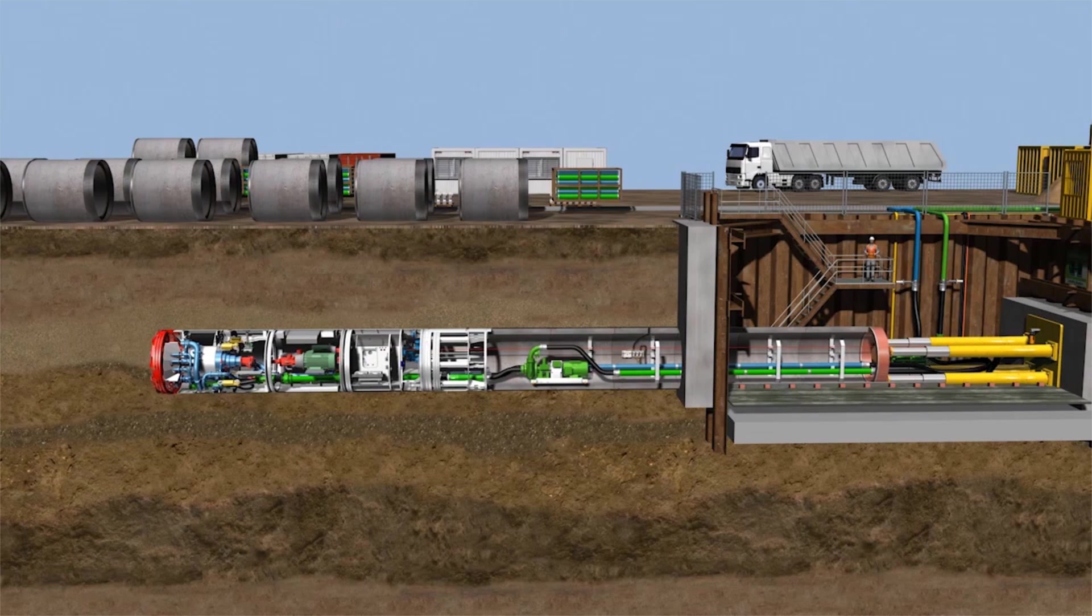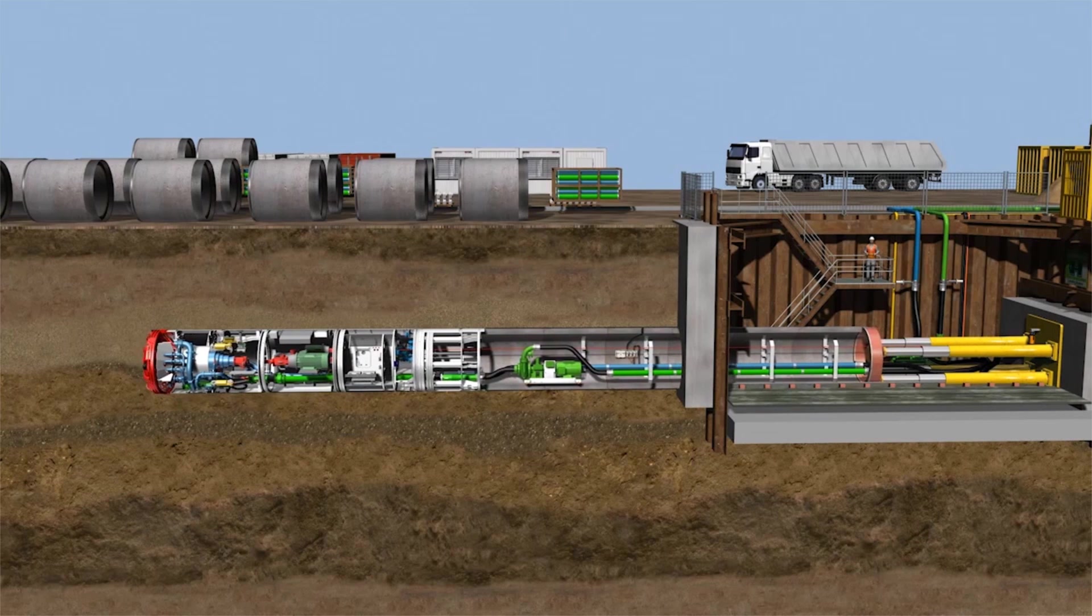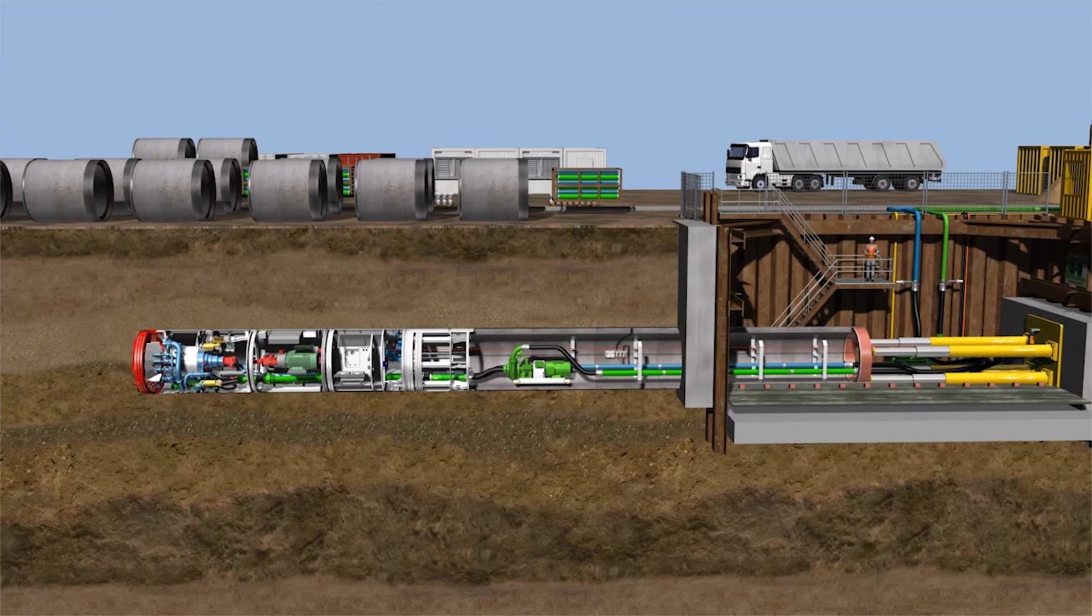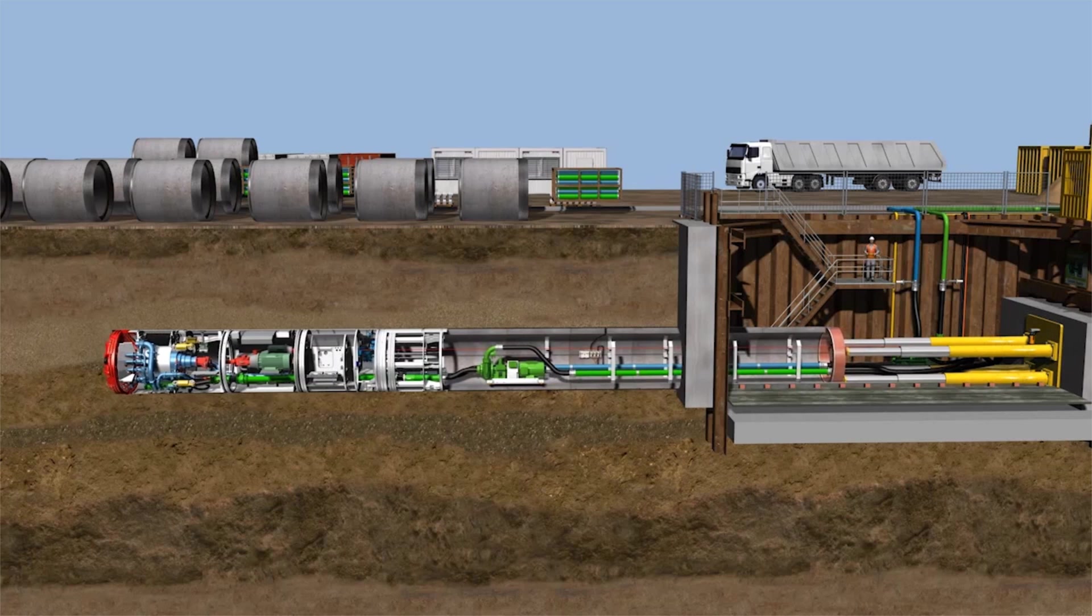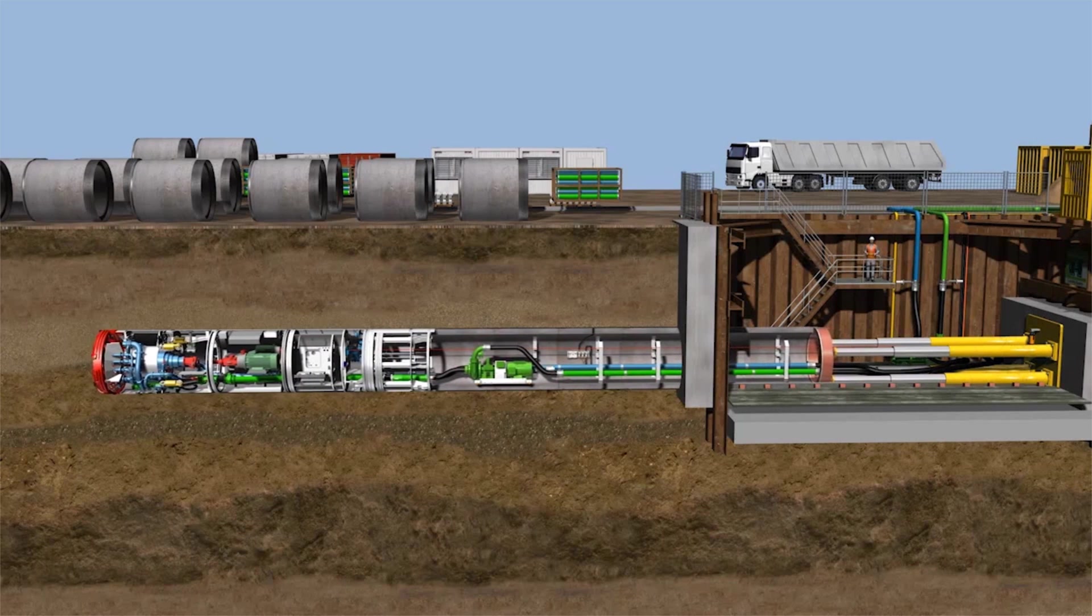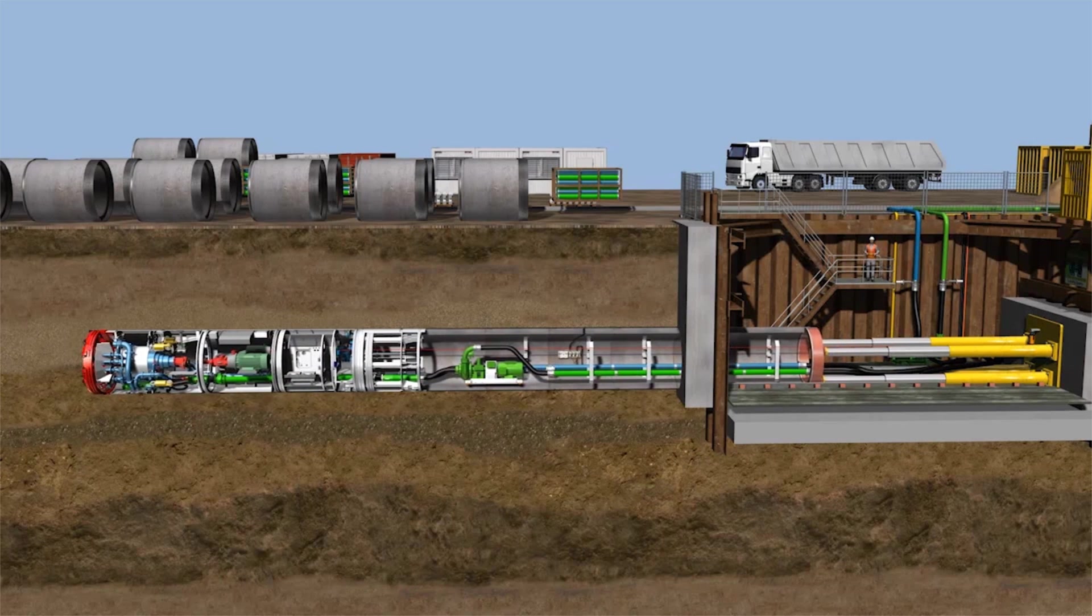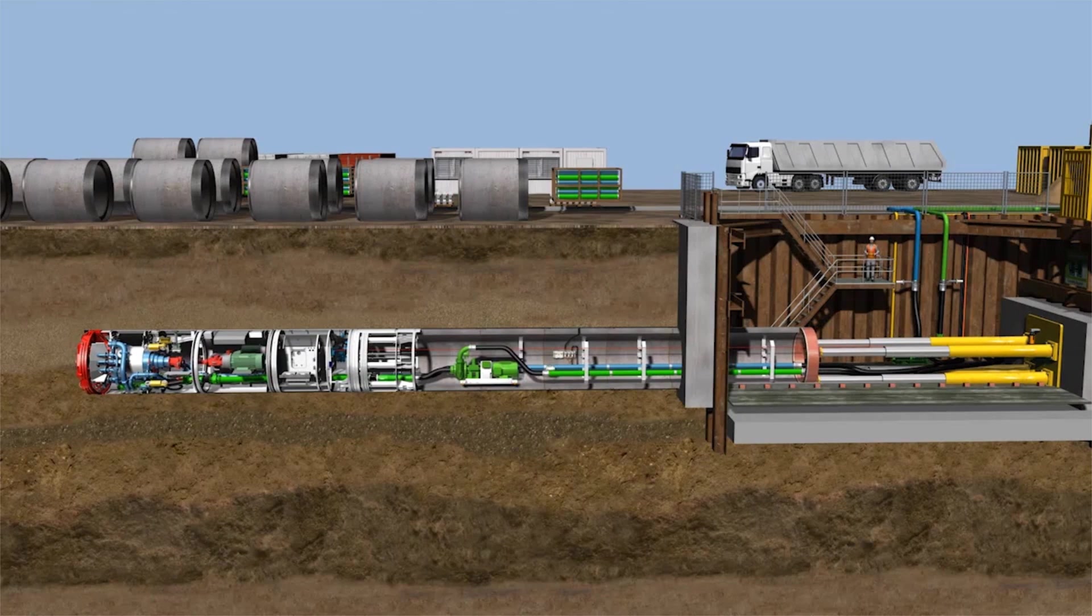When the main jacking station extends its cylinders, it pushes the entire pipeline and tunneling system forward. The force of the presses is transferred to the rotating cutting wheel, and the cutting tools on the cutting wheel remove the soil from the tunnel face during tunneling.